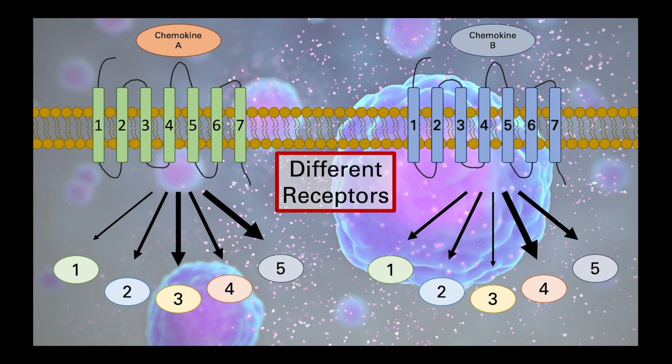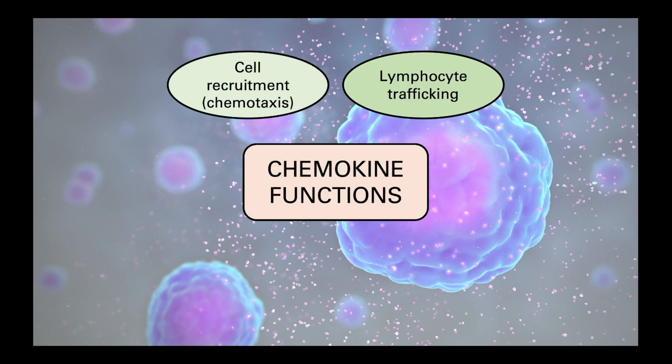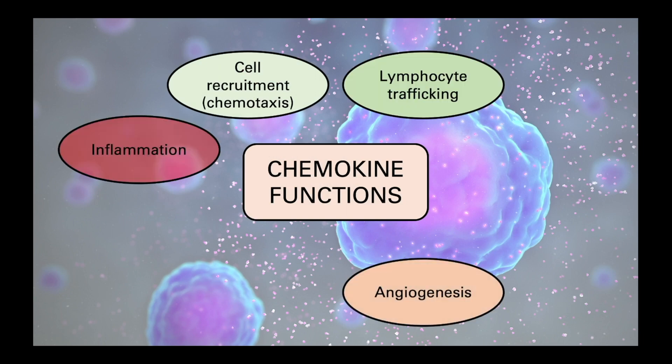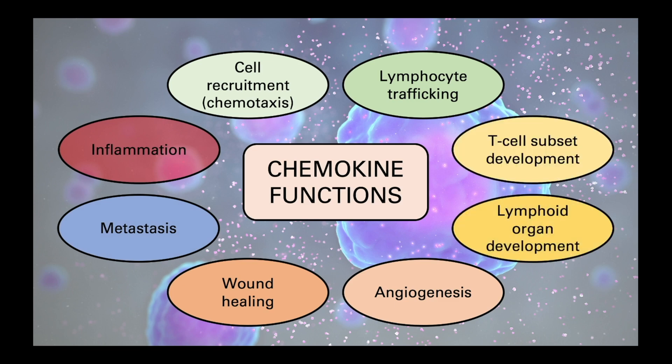While the main role of chemokines is chemotaxis, that is far from their only biological effect, and this figure summarizes many of their other outcomes. They play roles in the inflammatory response, in angiogenesis and wound healing, the development and spread of cancer, as well as shaping the development of the immune system.